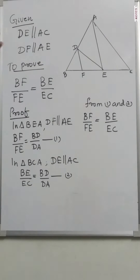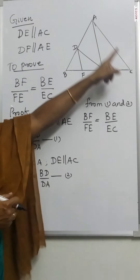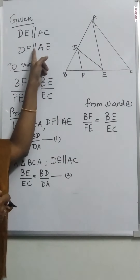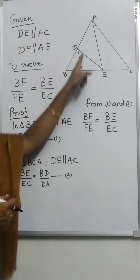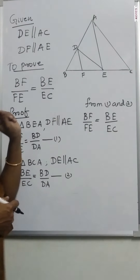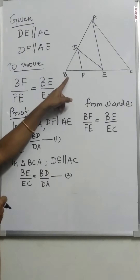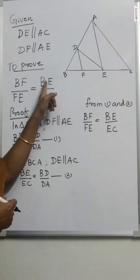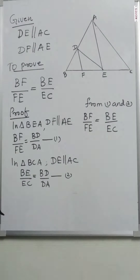Given that DE is parallel to AC and DF is parallel to AE. We have to prove that BF by FE is equal to BE by EC.